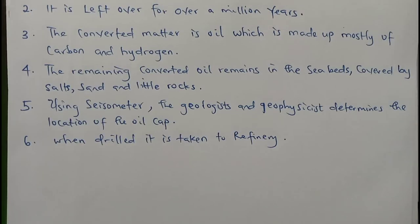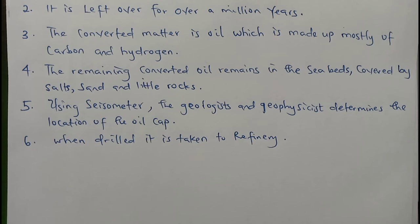There is equipment used by geophysicists and geologists called a seismometer. It is used to find the location of oil and works based on sound. After exploration, the next step is to drill the oil and take it to refineries. We'll look at a table showing the fractions obtained from fractional distillation of crude oil, the possible number of carbon atoms, the boiling point range, and the uses.